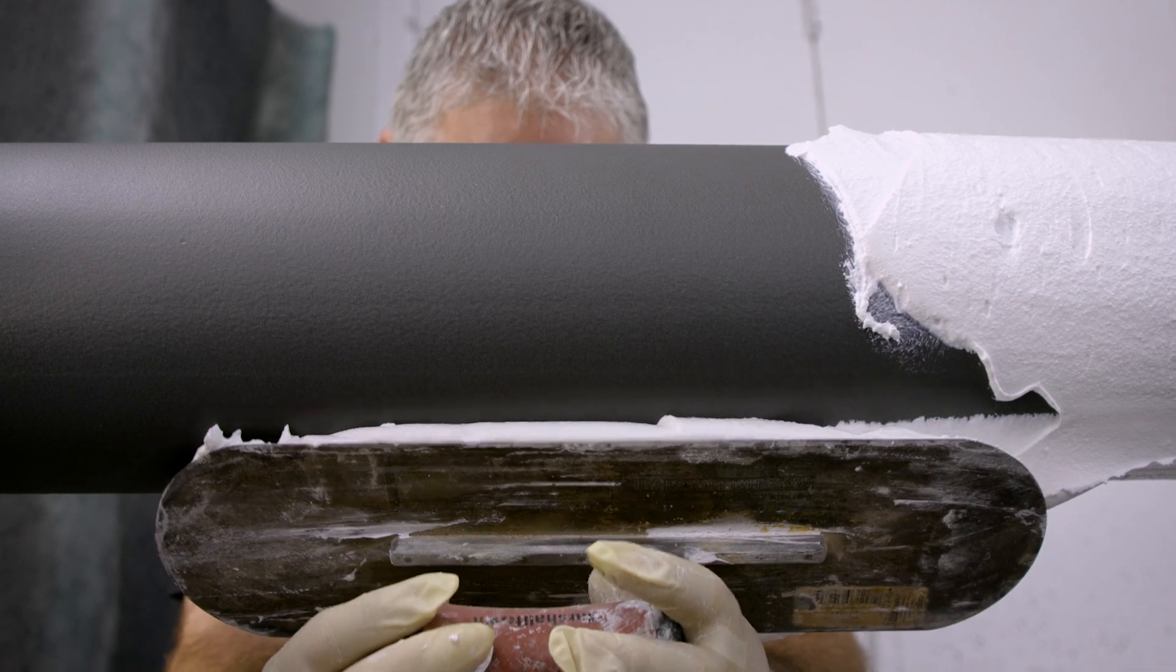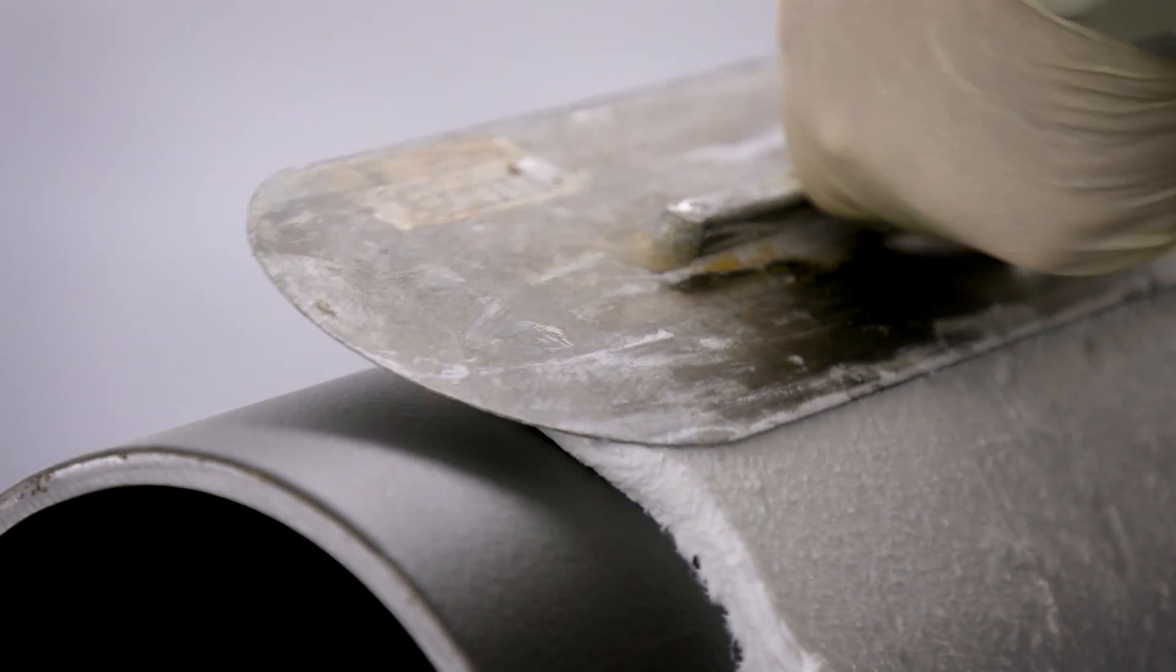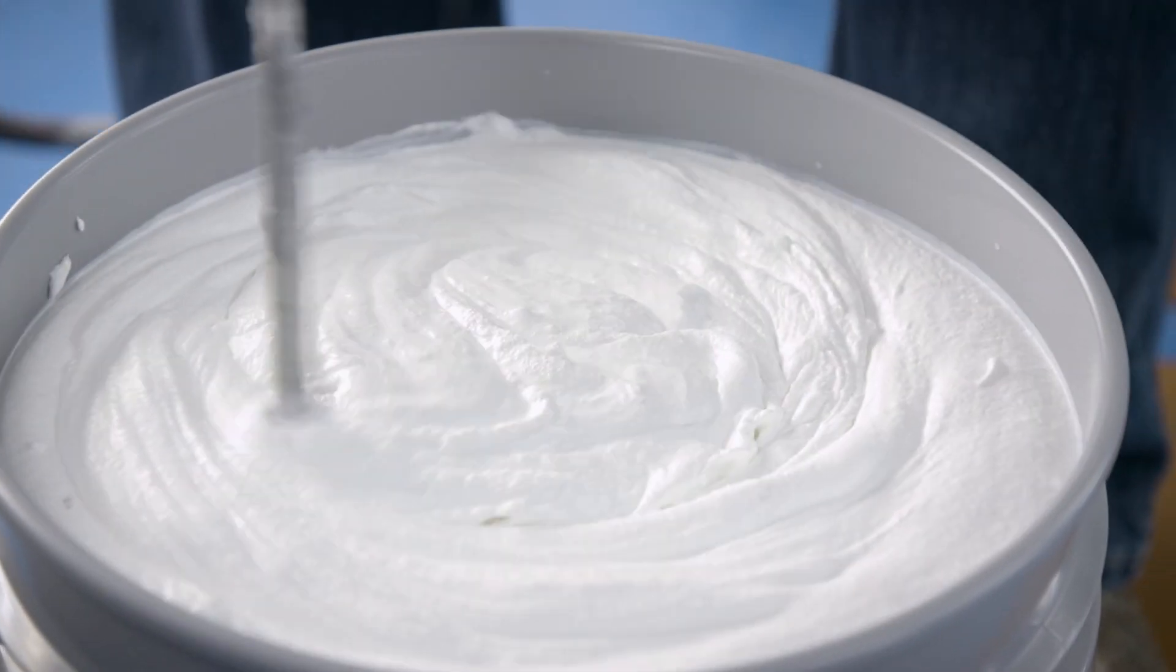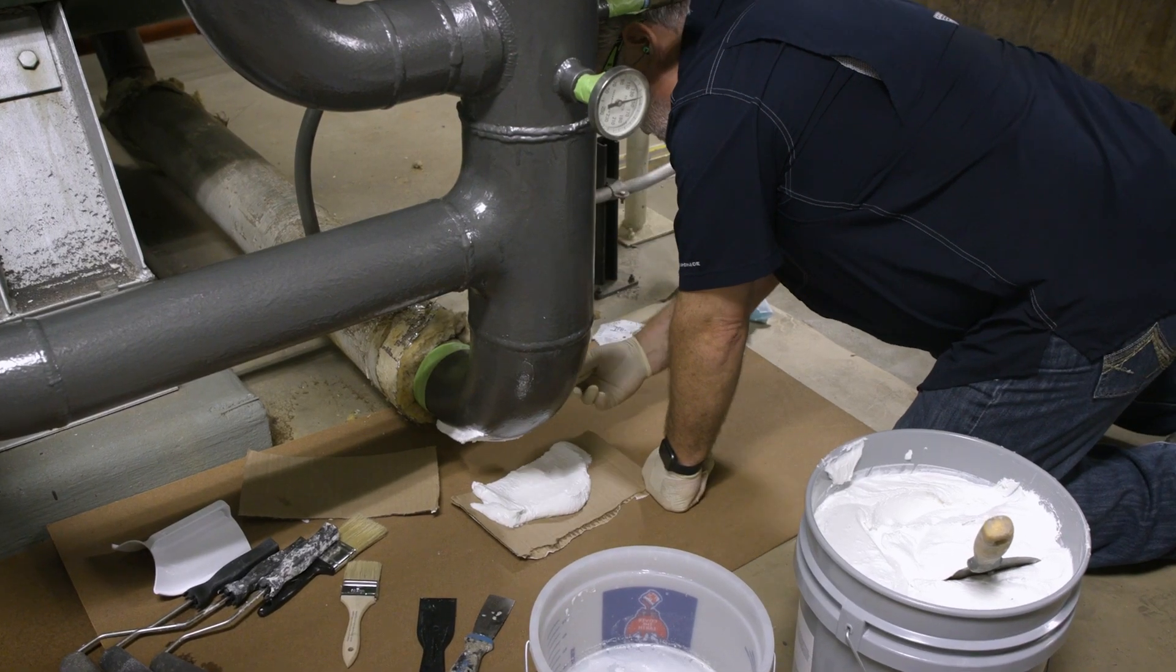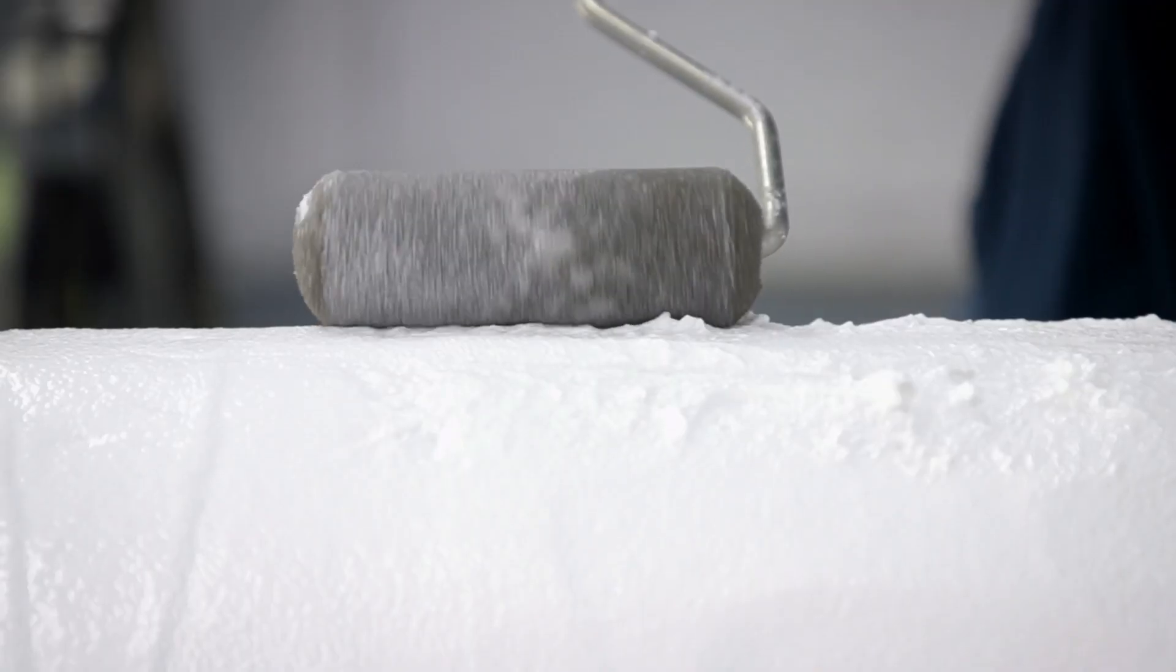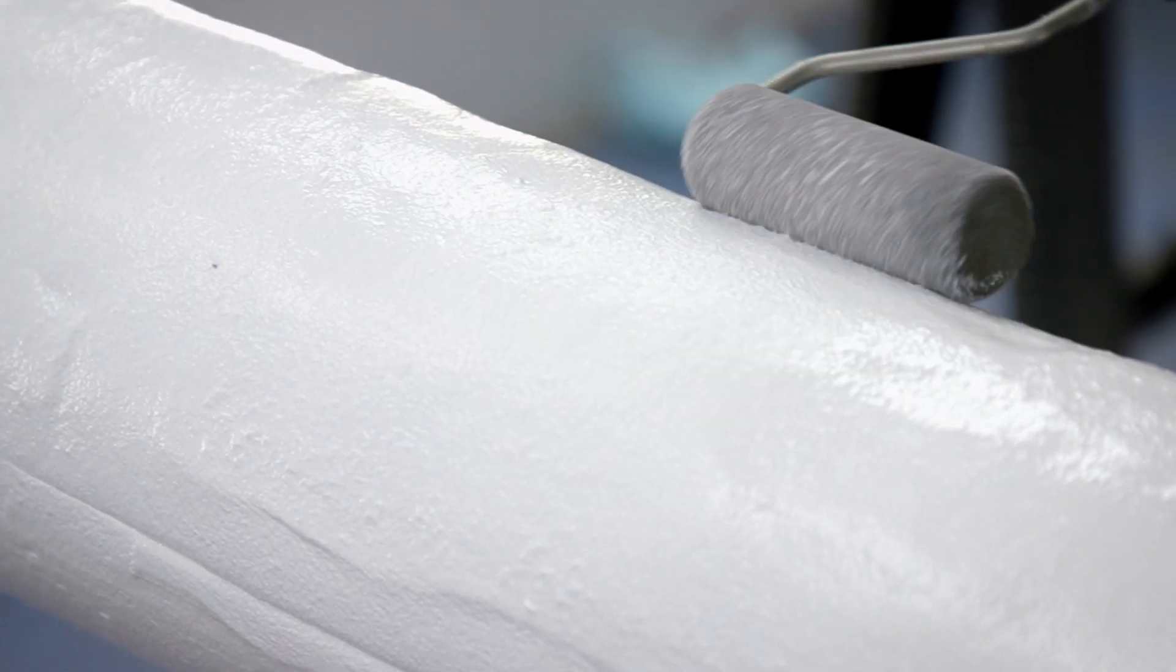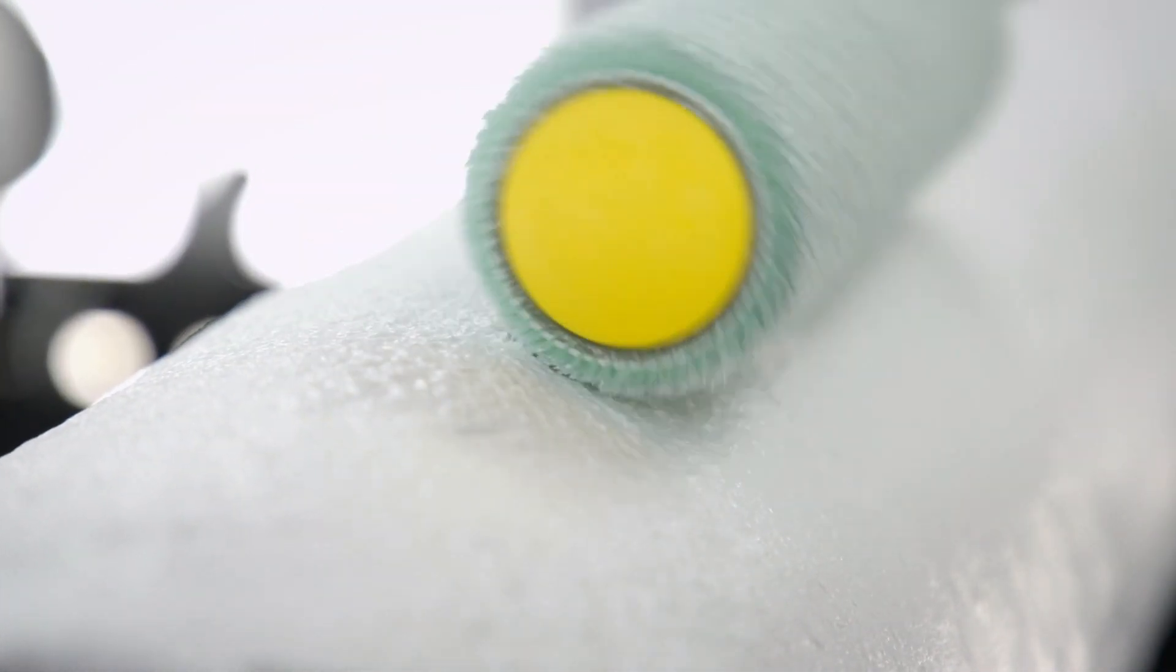HeatFlex can also be hand applied with a trowel. Again, mix the product thoroughly before application. This method can be useful when applying the product in hard-to-reach areas. For a clean and finished look, a paint roller can be an effective way to smooth out the product after application.